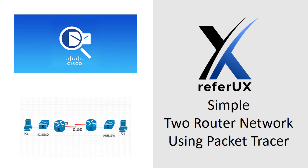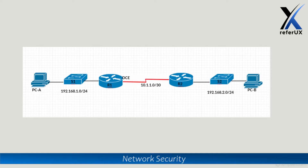Hello guys, welcome to ReferUX. I'm Nimesh. In today's demonstration, we will be showing a configuration of a simple two-router network using Cisco Packet Tracer. In this topology there will be two Cisco routers which are connected using a serial DCE cable.